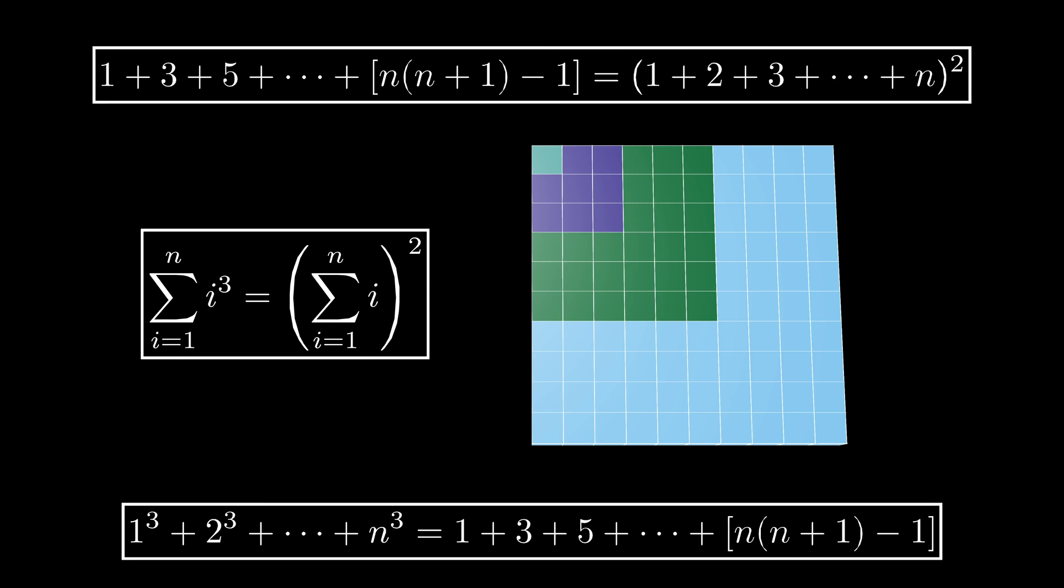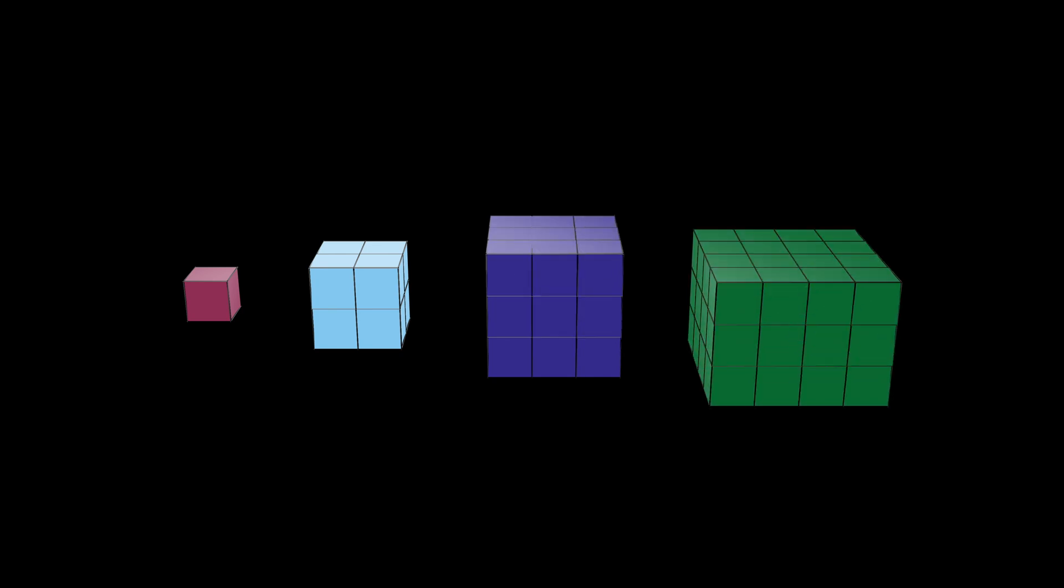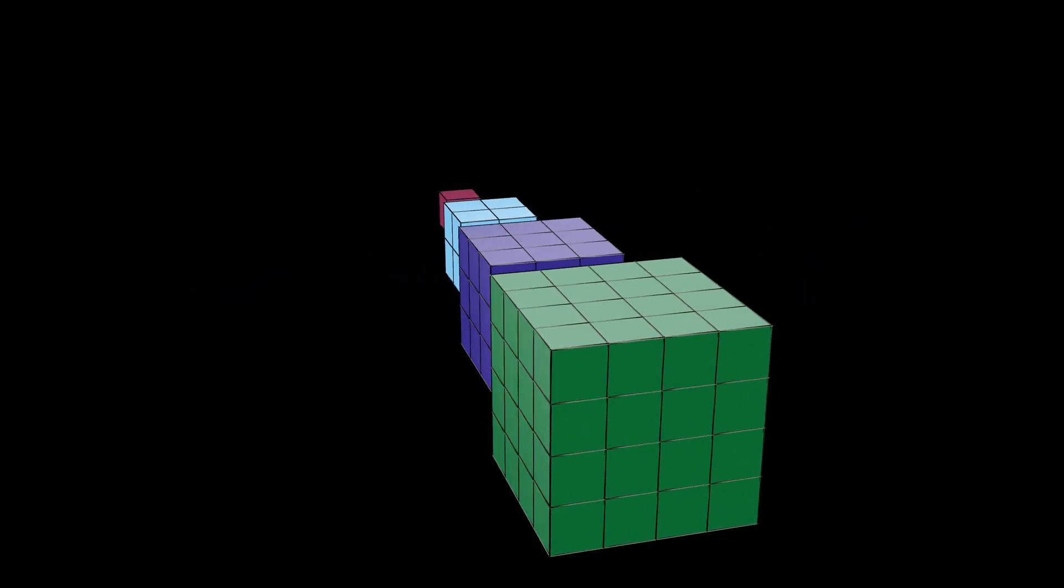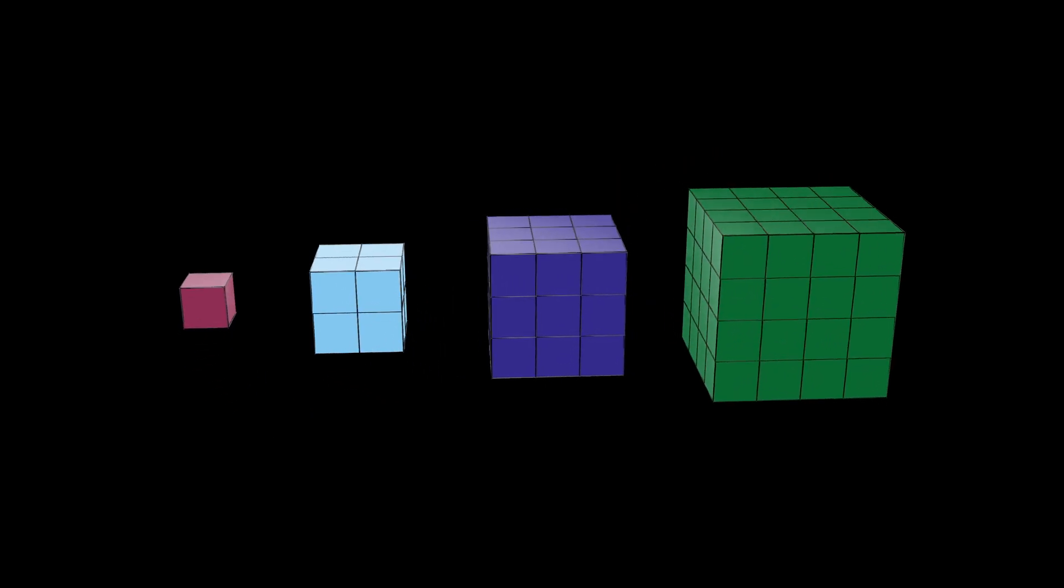This formula is attributed to the ancient Greek philosopher Nicomachus. The visual proof we just presented is due to Alfinio Flores, but there are plenty of other visual proofs of the same fact. You can see others on my channel, or you can find a variety of them in Roger Nelson's books Proof Without Words Volumes 1, 2, and 3. Have a look and let me know which visual proof of Nicomachus' theorem is your favorite.